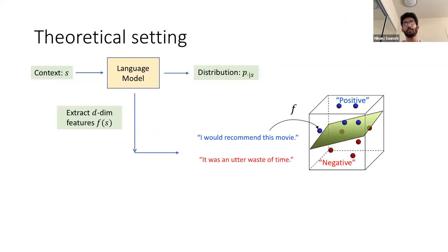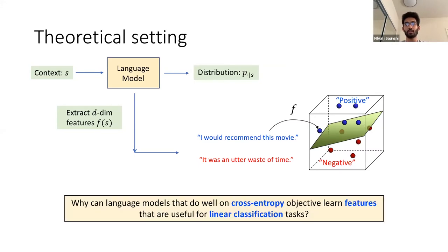To summarize the precise setting: we use a language model to extract D-dimensional features, where D can be thought of as a low-dimensional feature, something like one thousand. This feature map is then used for a downstream task. For the task of sentiment classification of movie reviews, you first embed all reviews into a D-dimensional vector space and learn a linear classifier to separate the two classes — positive and negative. The question we wish to answer is: why can language models that do well on the cross-entropy objective learn features that are useful for classification tasks via a linear classifier?